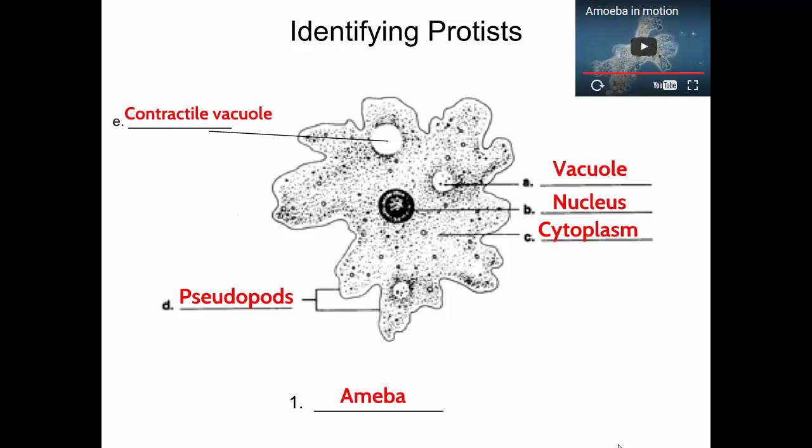What does the contractile vacuole mean? It's an adaptation for living in fresh water — it pumps out excess water. Because these are freshwater aquatic organisms, water is constantly moving into them through osmosis. So if they didn't get rid of some of that water, they would swell up. They have these contractile vacuoles that take in water and pump it out to maintain the right water balance. If there are little bits of stuff inside, it's a food vacuole; if it's clear inside, it's the contractile vacuole filled with water.